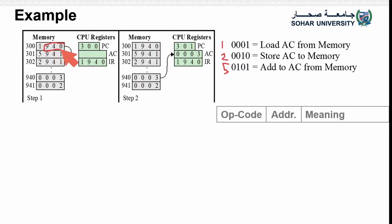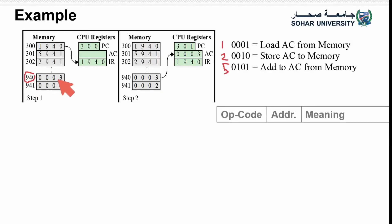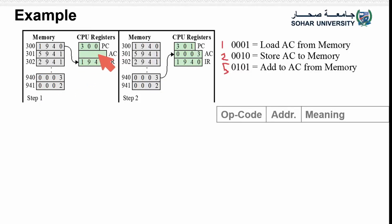The address 940 holds the value 3. So the full instruction is: LOAD (opcode 1), from address 940. Whatever is inside address 940 — which is the number 3 — gets loaded into the accumulator register. This is step 1 (fetch) and step 2 (load into accumulator).